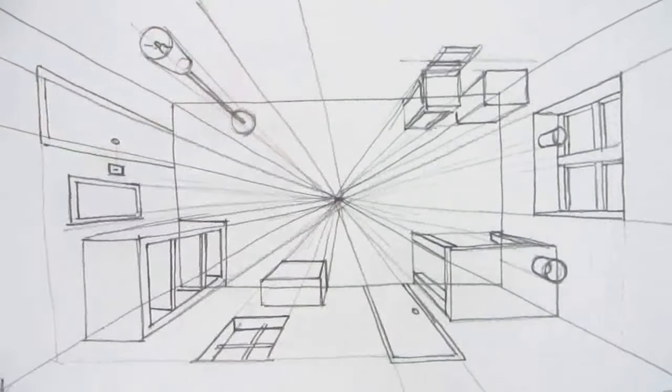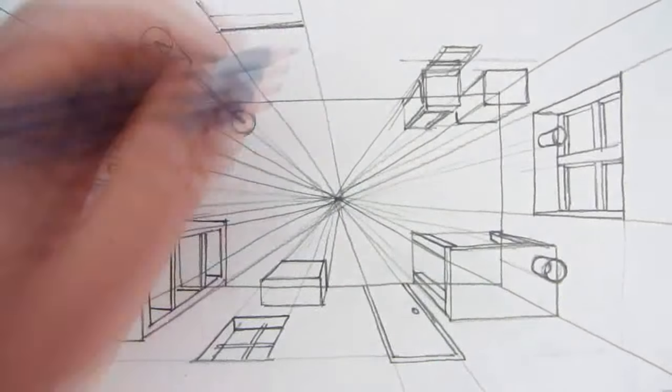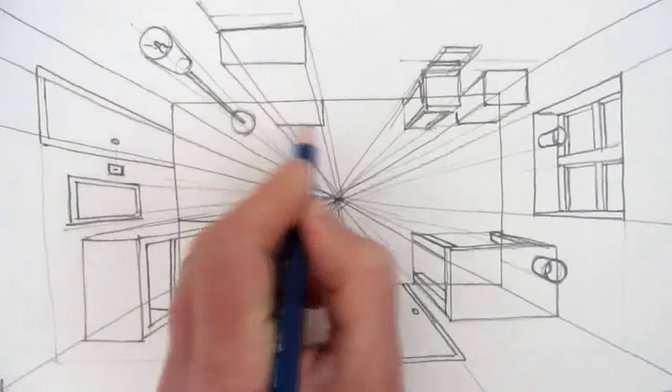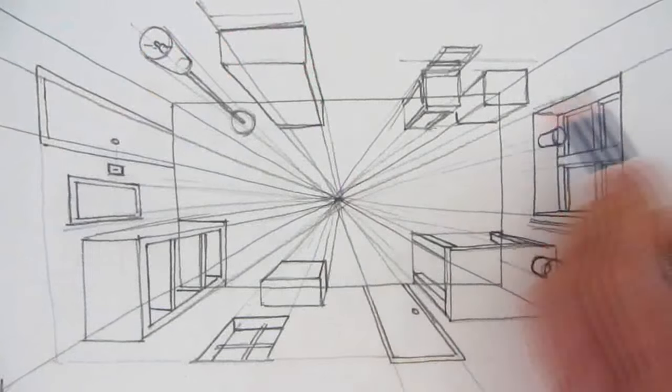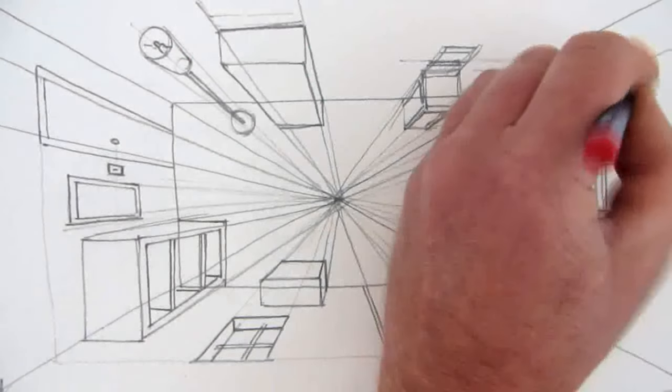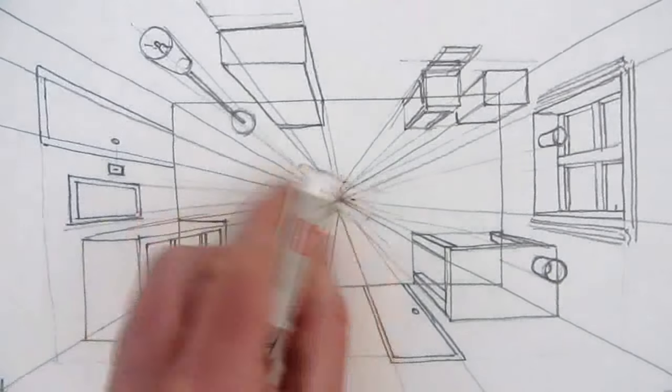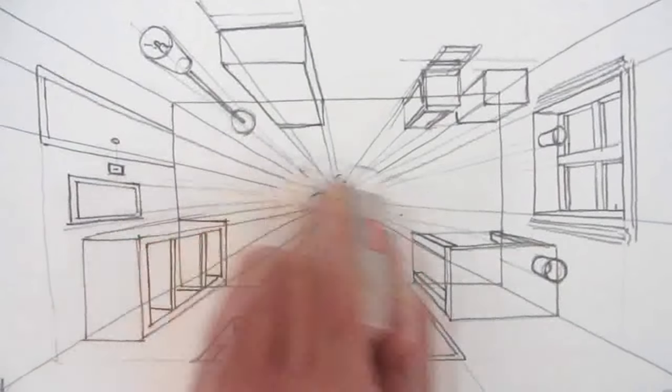And now I'll add yet another bookcase on this side of the room, and maybe some curtains along here. So basically I've got most of the things in the room, but it's looking a little bit cluttered, so I need to erase the center vanishing point and all the extra lines that go towards the vanishing point which I no longer need.